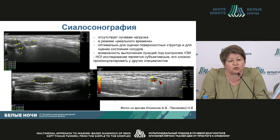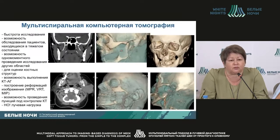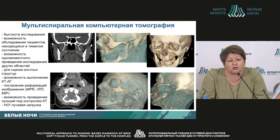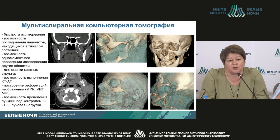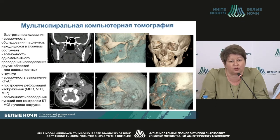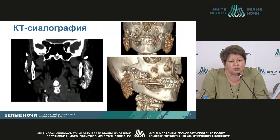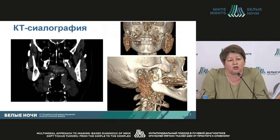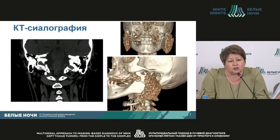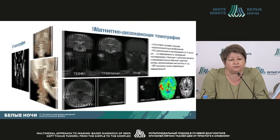Unfortunately, it's a subjective method and it's difficult to get a second opinion from a different profession. For computer tomography, CT — primarily multispiral — it's a fast method and it's good for patients in grave condition. Other segments and areas in the body can also be assessed. You can assess costal structures and bones, combine it with angiography, provide different options for reformation, and you can puncture with CT assistance. However, it's quite high in terms of irradiation. A separate word on CT sialography to assess with contrast the flow.